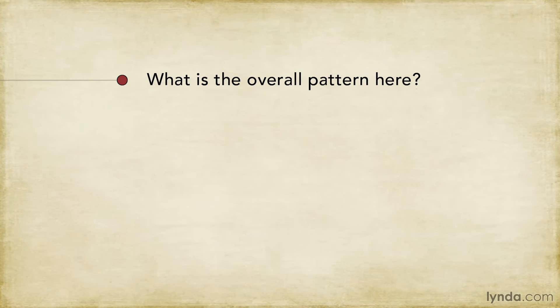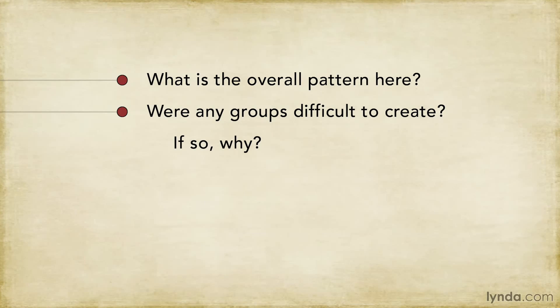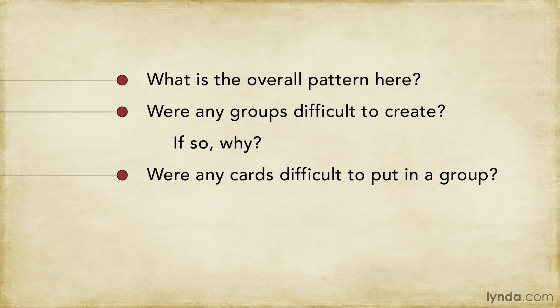The first is: what is the overall pattern here? Asking this question lets us understand the structure they used as the basis for the groups. Next, I'd ask: were there any groups that were difficult to create? This suggests items that may not fit well together. If there are any, then ask them why those groups were difficult to create. Then I'd ask: were any cards difficult to put into a group, and if so, why? This suggests items that might not be structurally related to each other.